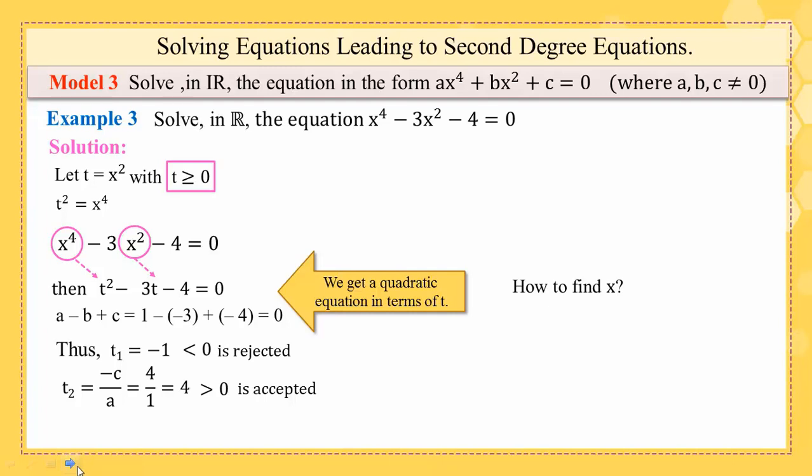As we notice that t = 4 is the accepted solution, but t is equal to x^2 as we put here in the first. So replace t by x^2, so you get x^2 = 4, and of course you know how to continue: x = 2 or x = -2. And these are the solutions of this equation x^4 - 3x^2 - 4 = 0.